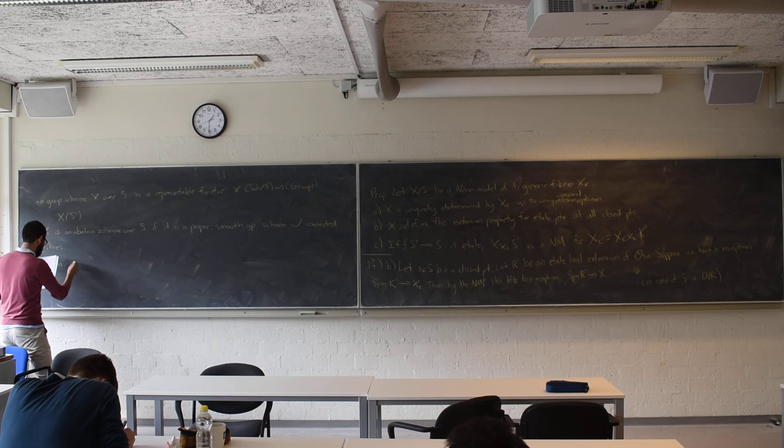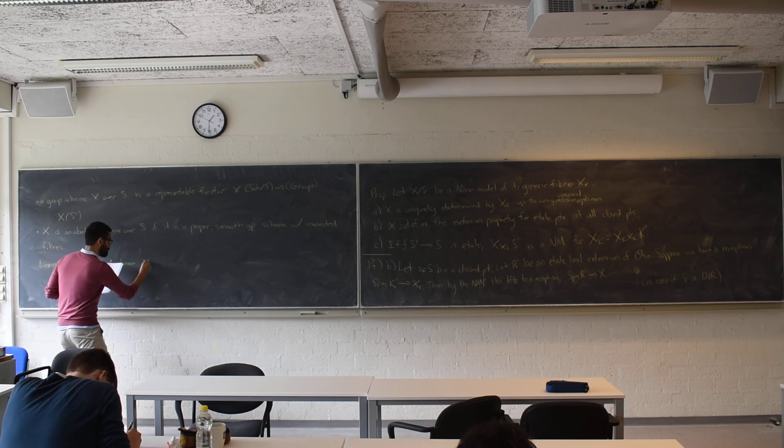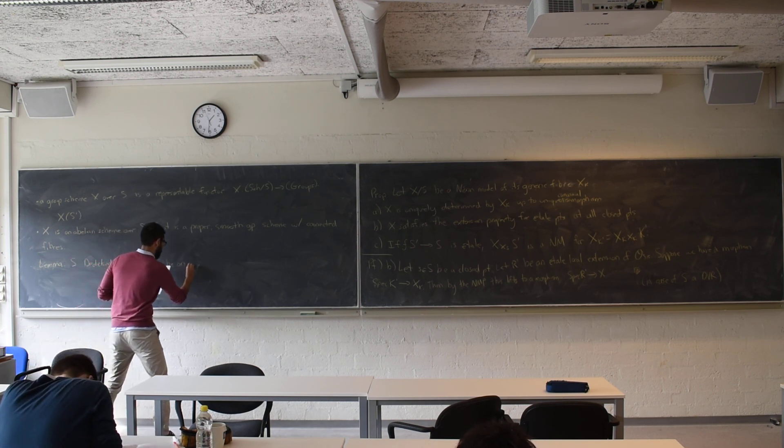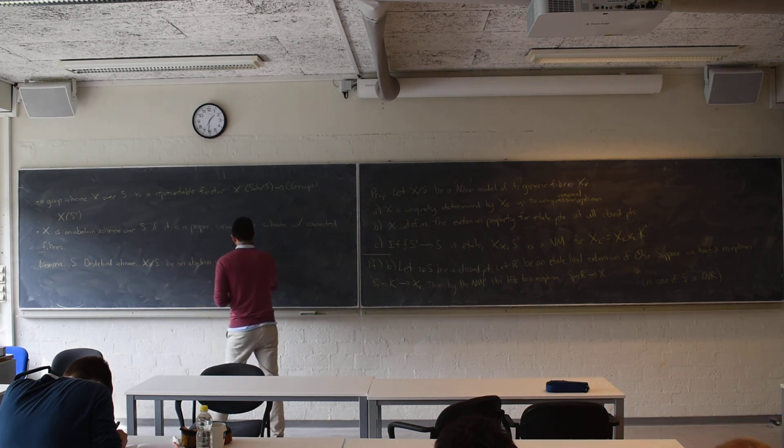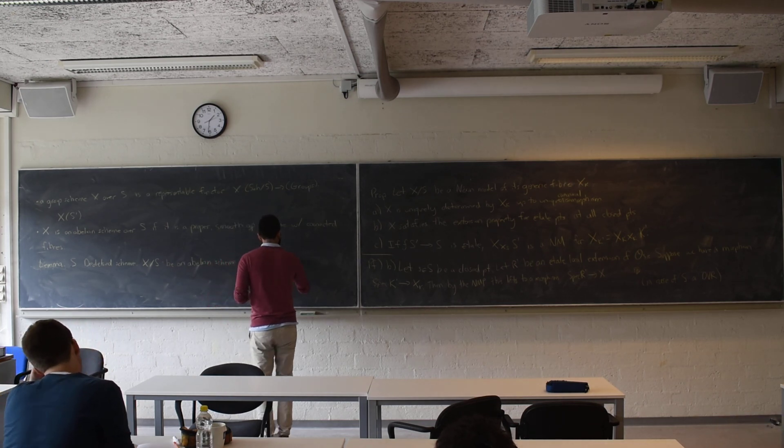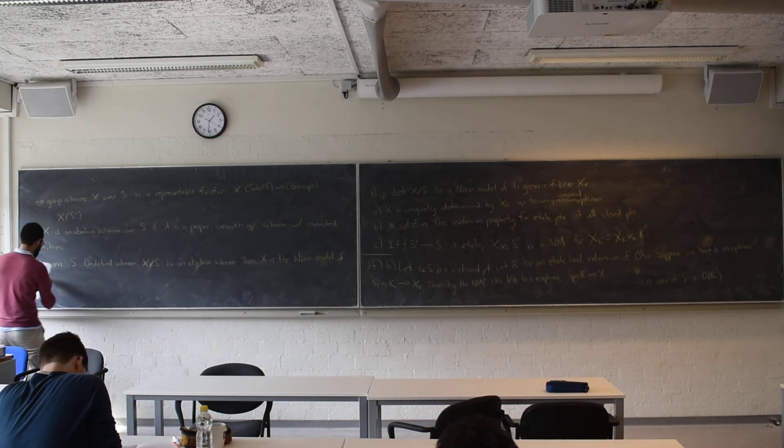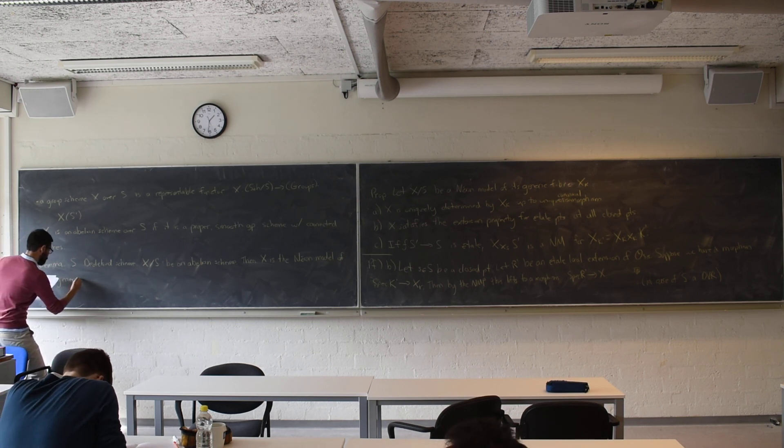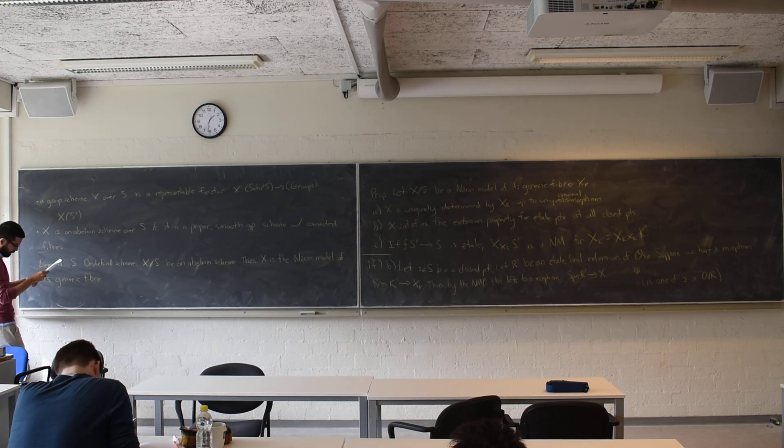We have a proposition: Let S be a dedekind scheme. Let X over S be an abelian scheme. Then X is automatically the Neron model of its generic fiber. And this is certainly not true if X is not an abelian scheme, if it's just the generic fiber.